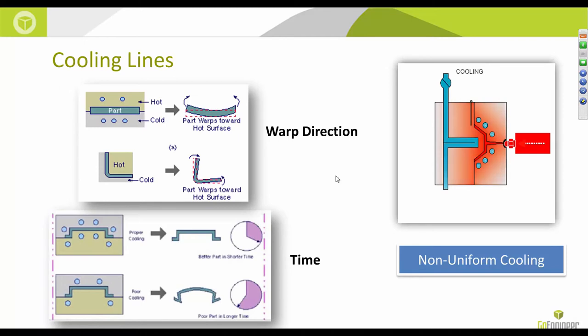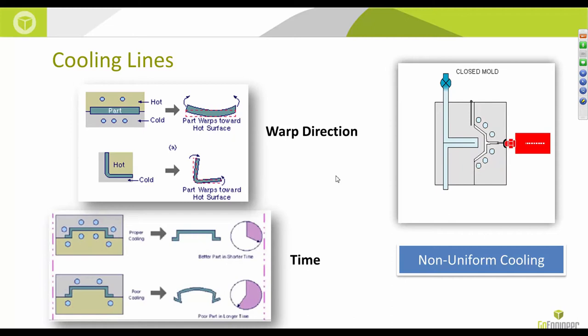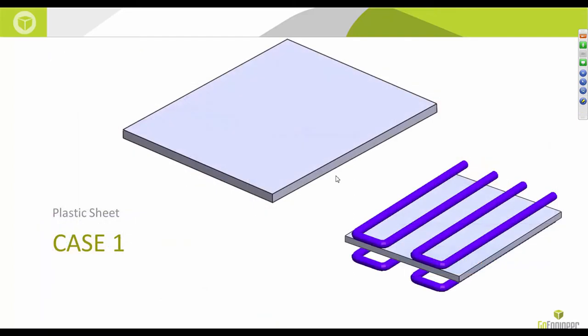Cooling lines also improve production throughput — the more parts you can produce in the least amount of time, the better. Cooling lines are huge contributors to how quickly you can cycle parts. To illustrate the effect of cooling lines, I've taken two cases starting with a simple plastic sheet. You can see the plastic sheet itself and the cooling lines running through the mold cavity used to manufacture it.